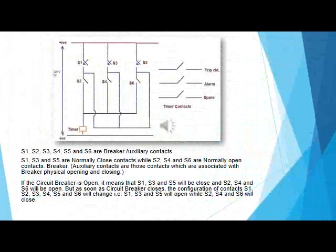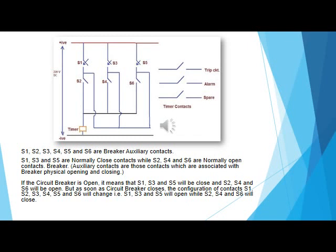For better understanding of pole discrepancy, carefully observe the figure. In the figure, S1, S2, S3, S4, S5, and S6 are breaker auxiliary contacts. Note that S1, S3, and S5 are normally closed contacts, while S2, S4, and S6 are normally open contacts.